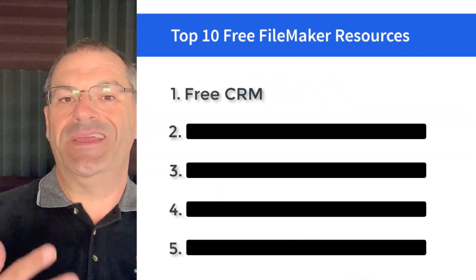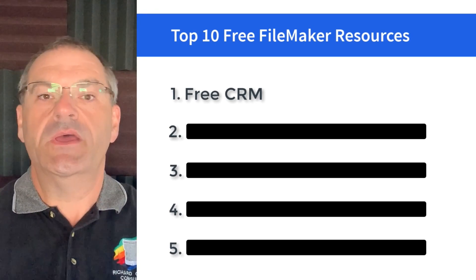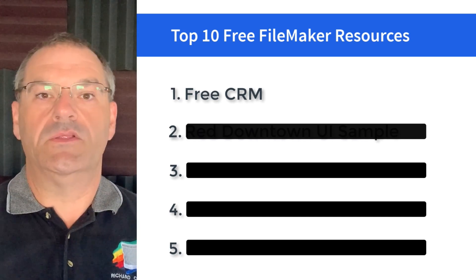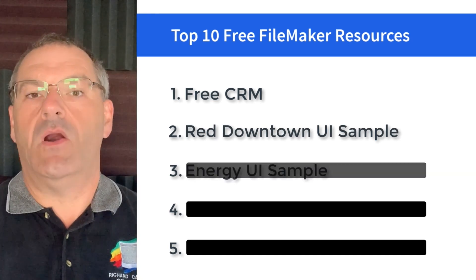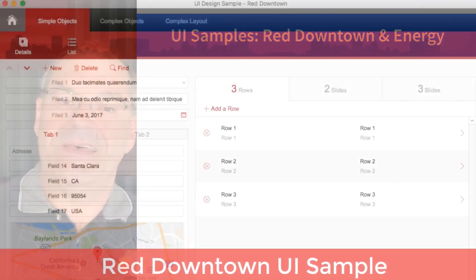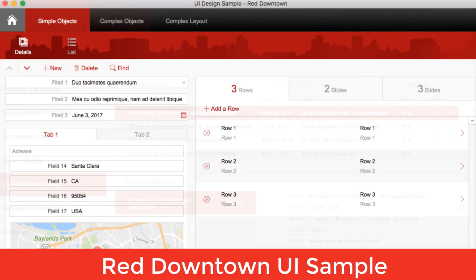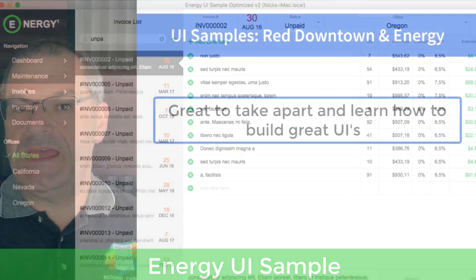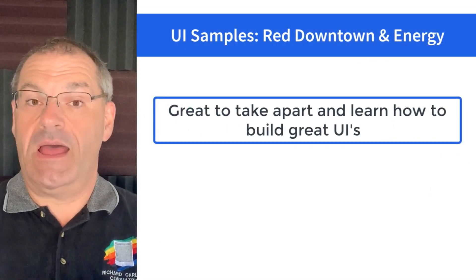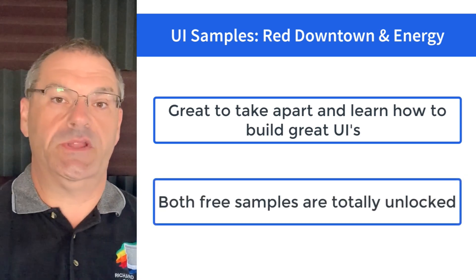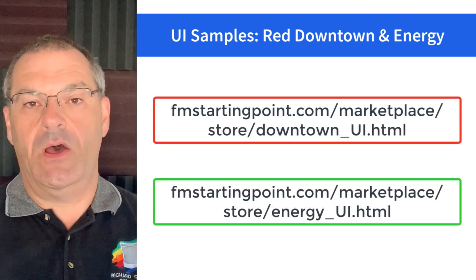Items number two and number three are very similar but different. They are interface sample tools that you can use to check out possible interfaces that you can build with the FileMaker platform. One is called Red Downtown and the other one is called Energy. They're both really awesome interfaces and they're great at showing some of the capabilities of the FileMaker platform beyond a basic black and white screen. These two free user interface samples are totally unlocked and available at the links you see on screen.